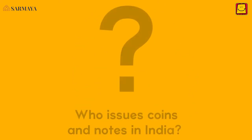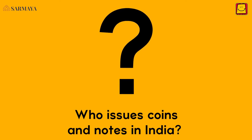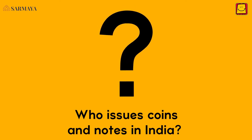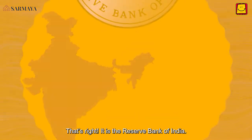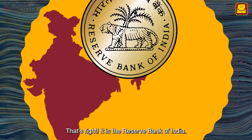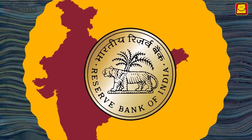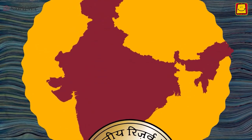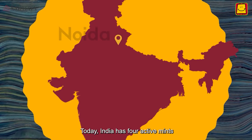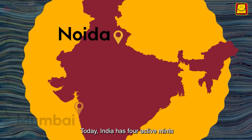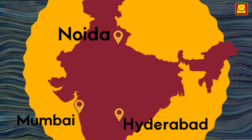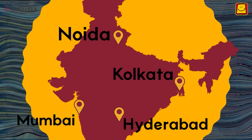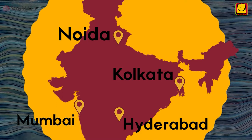Do you know which authority or institution can issue coins and notes in India? That's right — it is the Reserve Bank of India. Today, India has four active mints, and each has a mint mark placed below the year on the reverse of the coin.